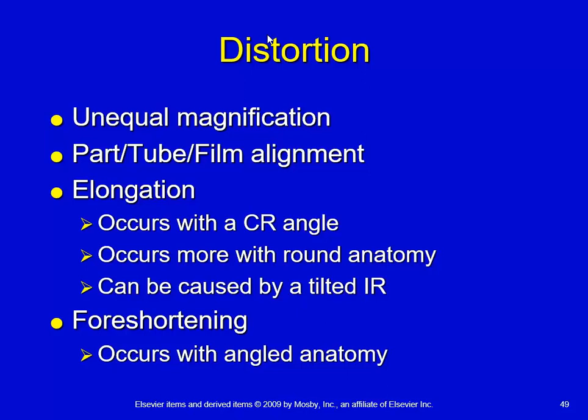Obviously there's not going to be any foreshortening whenever you have a spherical shaped object. But whenever you have an elongated object already — like a long bone — and you angle it from the image receptor, or angle the image receptor itself, when you have a long type of anatomy like a femur, tib-fib, or forearm, when you angle the anatomy, what you're going to get is foreshortening.